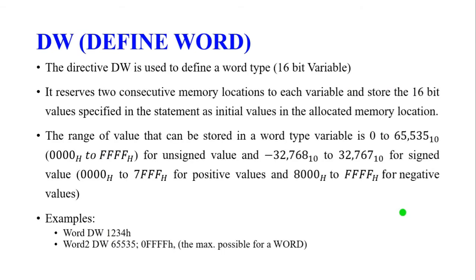The DW (Define Word) directive is similar to DB but is used to store a 16-bit variable. It reserves two consecutive memory locations for each variable and stores the 16-bit value specified in the statement as the initial value in the allocated memory location.